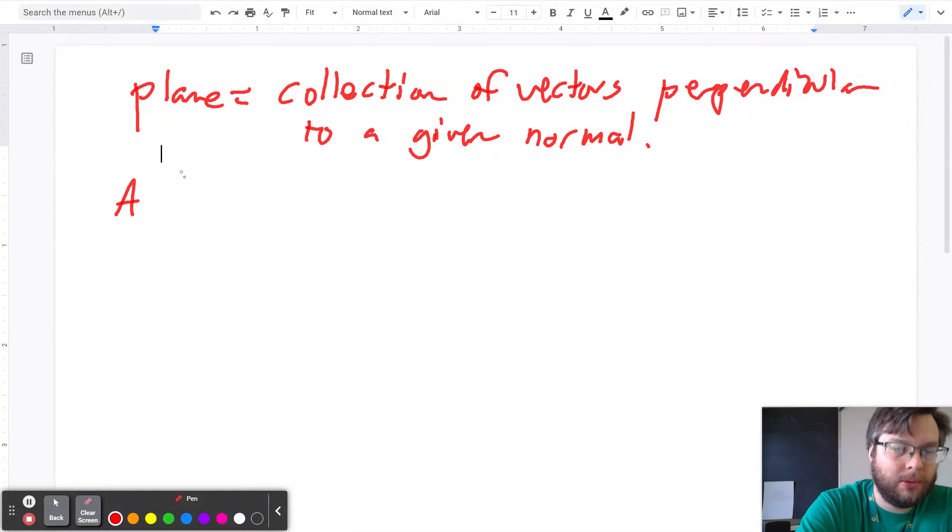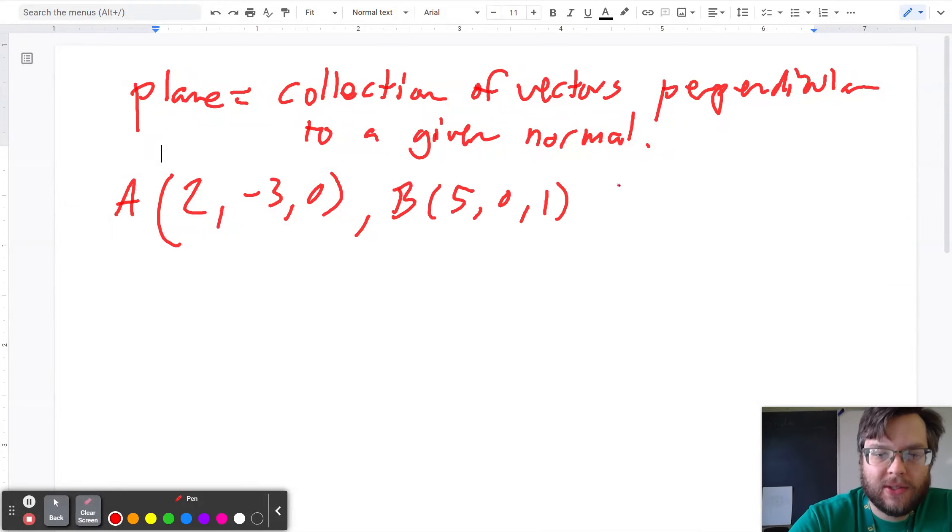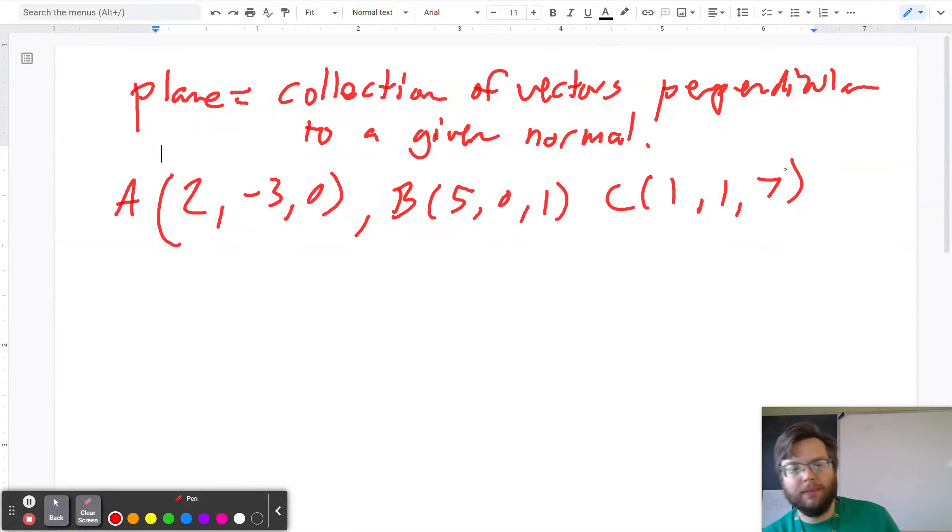I'll make up some random points. Let's say A is (2, -3, 0), B is (5, 0, 1), and C is (1, 1, 7). It doesn't matter, I just threw random points down. Maybe something will come up nasty, maybe it will come up nicely.